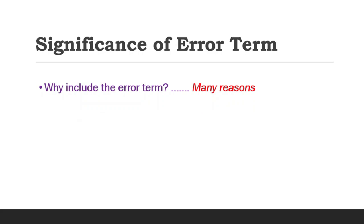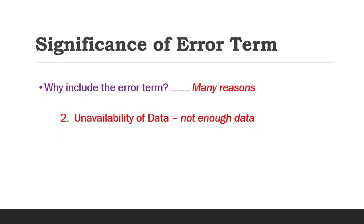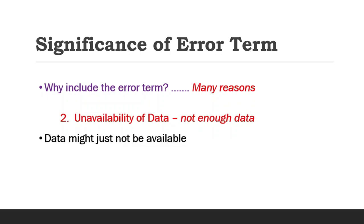The second point is unavailability of data. We may not have enough quantitative information about some variables we want to observe in an econometric model. Data might just not be available on a particular variable, so that variable is simply omitted and the u parameter substituted.